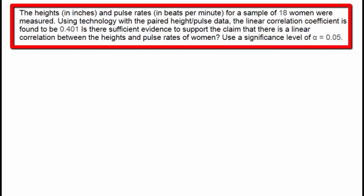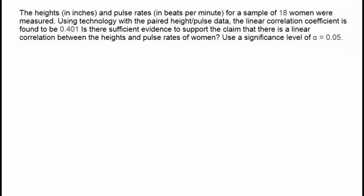In this first problem, the heights and pulse rates for a sample of 18 women were measured using technology with the paired heights and pulse data. The linear correlation coefficient was found to be 0.1401, and we're asked: is there sufficient evidence to support the claim that there is a linear correlation between the heights and the pulse rates of women, using a significance level of alpha equal to 5%?